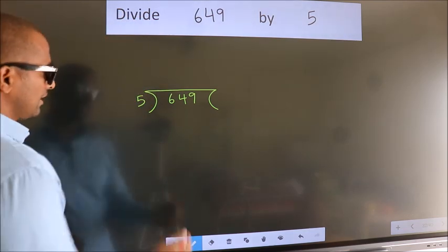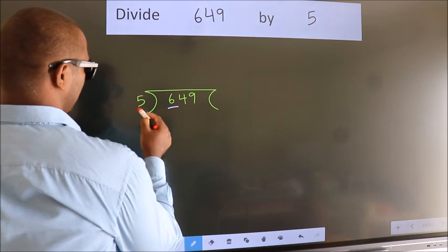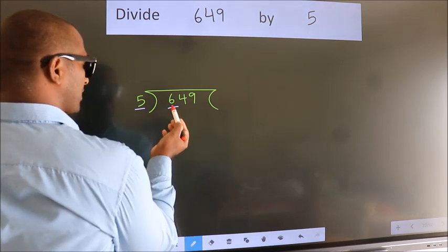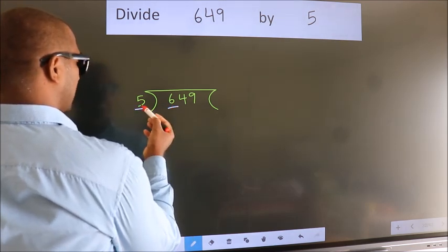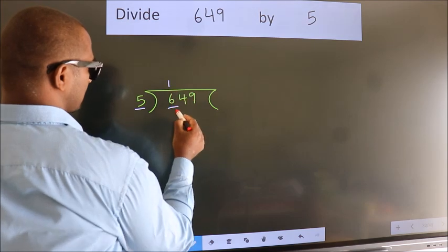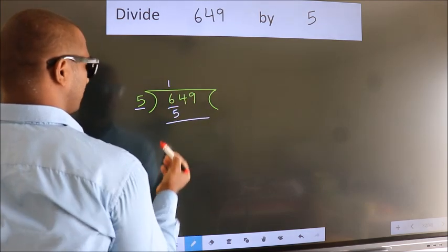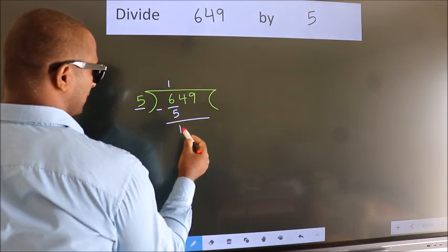Next, here we have 6, here 5. A number close to 6 in the 5 table is 5 once 5. Now we should subtract. We get 1.